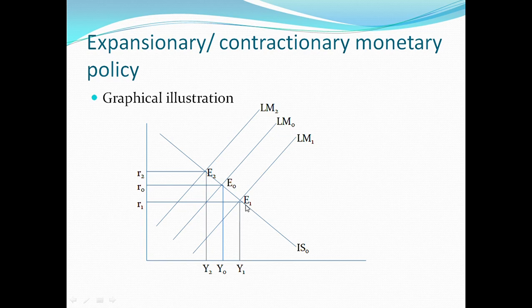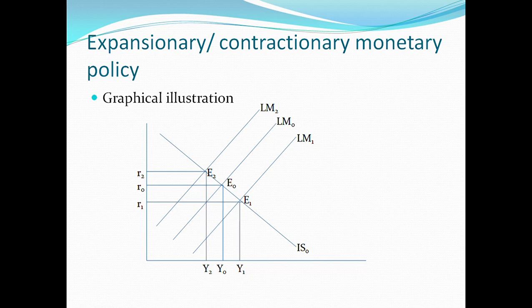For contractionary monetary policy, a contraction in the money supply means we increase interest rates, which you can see here: interest rates increase from R0 to R2, and we have our equilibrium at E2. National income also contracts from Y0 to Y2. To note the economic effectiveness of either policy — whether contractionary or expansionary — it depends on the steepness or flatness of the LM curve or IS curve.